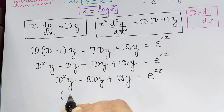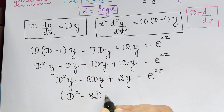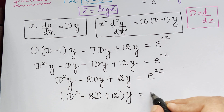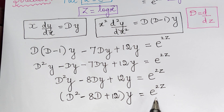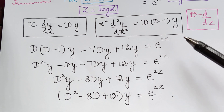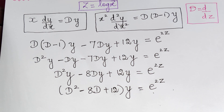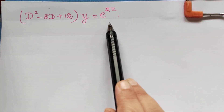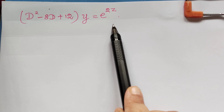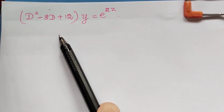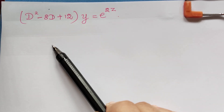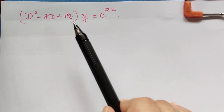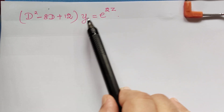Taking y common, we get (D² − 8D + 12)y equals e^(2z). We have now obtained a linear differential equation with constant coefficients. We solve this by the usual method: first find the auxiliary equation to get the complementary function, then find the particular integral since the right-hand side is not zero, and the final solution is y equals complementary function plus particular integral.